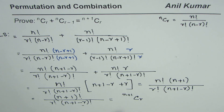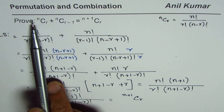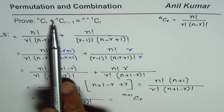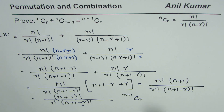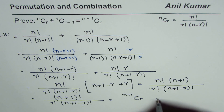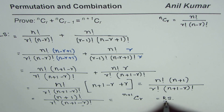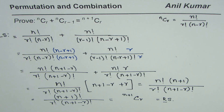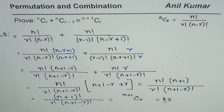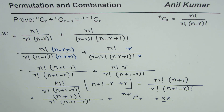In terms of the binomial coefficient we can write this as n plus 1Cr. So that is how we can say that nCr plus nCr minus 1 is equal to n plus 1Cr. The left side is indeed equal to the right side, and that is how you can prove this identity. I hope that helps. Thank you and all the best.